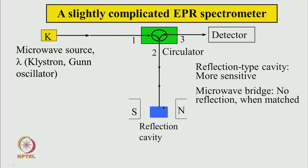The cavity will be reflection type — it reflects the microwave power and goes back. While going back, it would not go to port number 1; instead it will go to port number 3, where we keep a detector. So the Q of the cavity is much higher than the transmission cavity. The spectrometer works on the principle of reflection of microwave from the cavity. The reflection cavity forms a standing wave, and we can adjust the microwave frequency such that it forms a standing wave and reflection from the cavity is minimum.